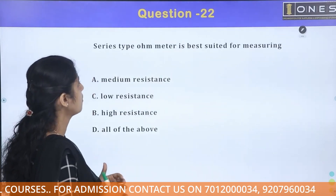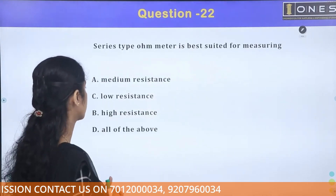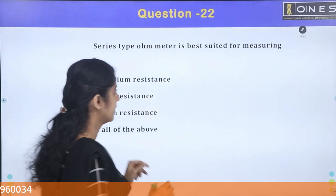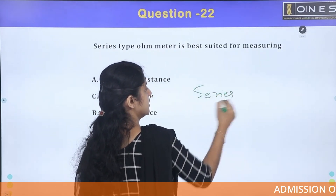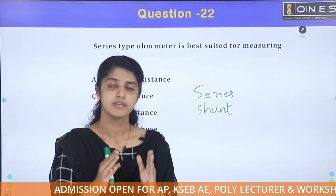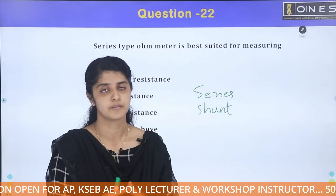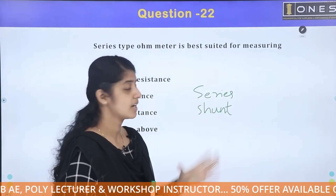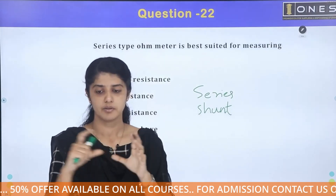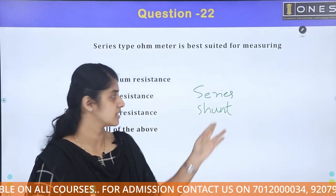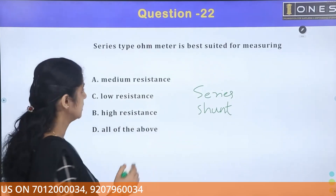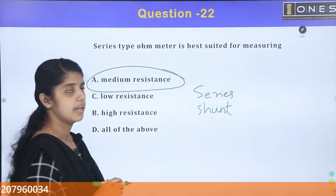Next question: the series-type ohmmeter is best suited for measuring what? The ohmmeter has a series type and a shunt type. If you use the series-type ohmmeter, it is suitable for measuring medium resistance.